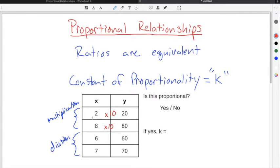You could use the same process but in reverse if you want to use division instead. So to go from y to x, 60 to 6, we would divide by 10. And then 70 to 7, we would also divide by 10. So this is proportional because the constant in between the values is equal. Because we are either multiplying by 10 or dividing by 10, the constant of proportionality is 10.